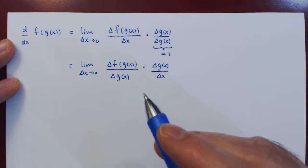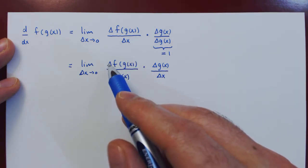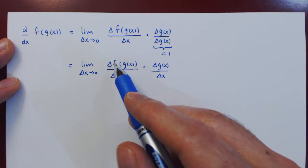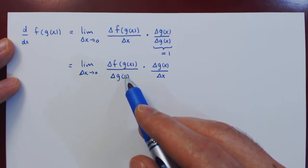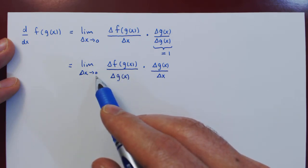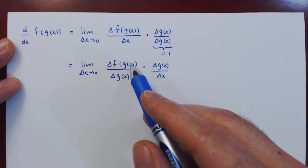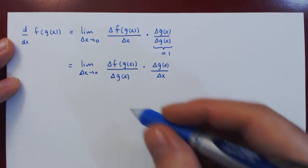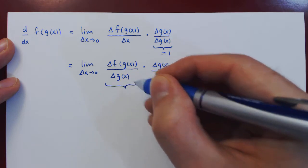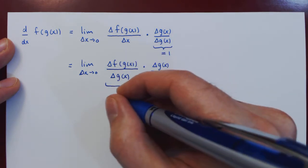And now if you notice, of course, the corresponding changes are matching, right? On the numerator of the first fraction, we have a change in the function f around the point g of x, divided by a change around the point g of x. So as delta x approaches 0, we have a change in the function f around the point g of x divided by a change in the same expression. So this will be approaching the slope of the function f around the point g of x.